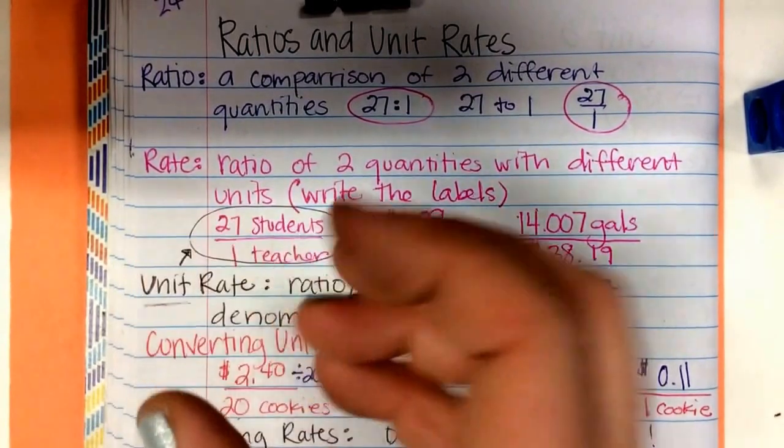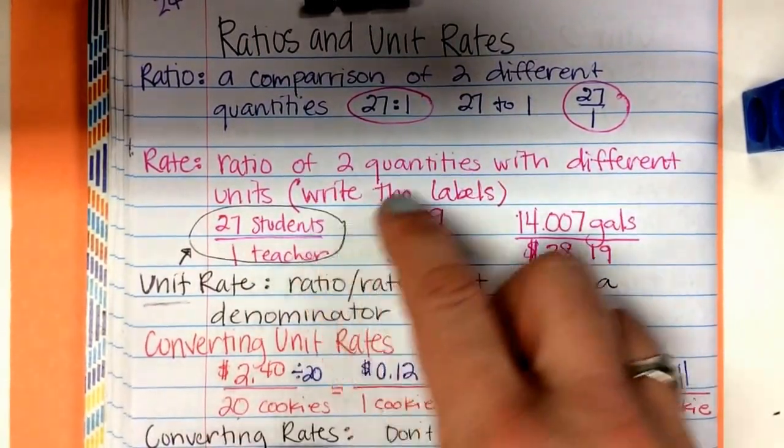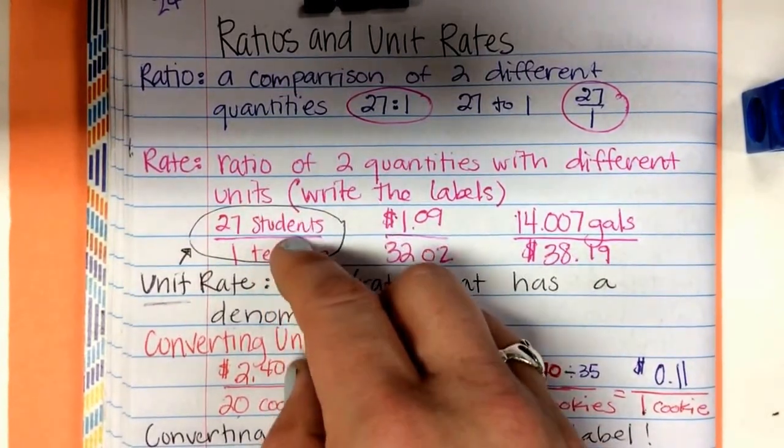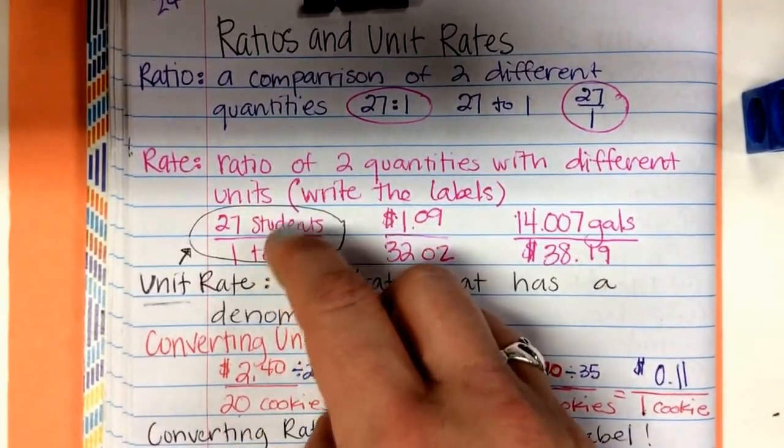So a rate is still a comparison, but we add labels. You can't say 21 students-to-1 student. They have to be different labels.